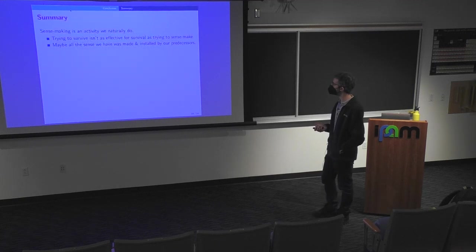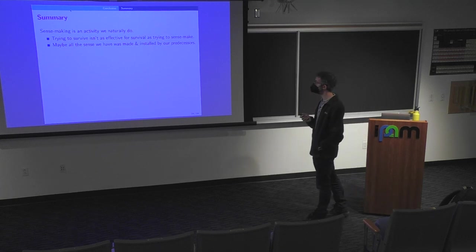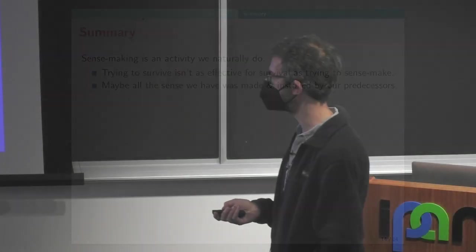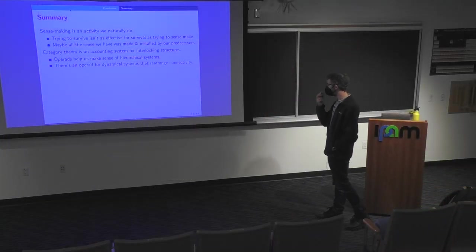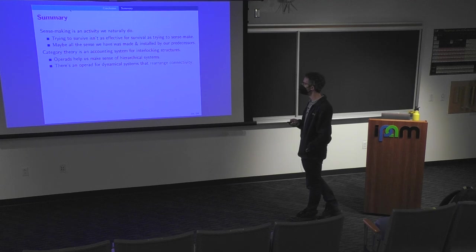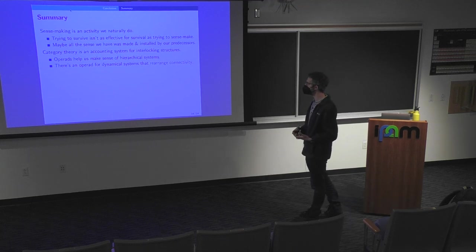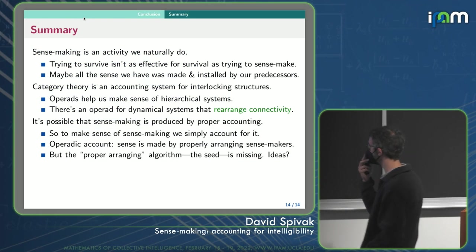So to summarize, sense making is an activity we naturally do. And I think that trying to survive isn't as effective for survival as trying to sense make. Now that's a weird claim, but I think the student who tries to survive in class does not survive as well in their math class as the student who tries to sense make. So maybe all the sense we have was actually made and installed by our predecessors through something like proto sense making. Now category theory is an accounting system for interlocking structures. Operads can help us make sense of hierarchical systems. And there's an operad for dynamical systems that rearrange their connectivity. And I'm wondering whether this is enough as an accounting system where an account for sense making could be written.